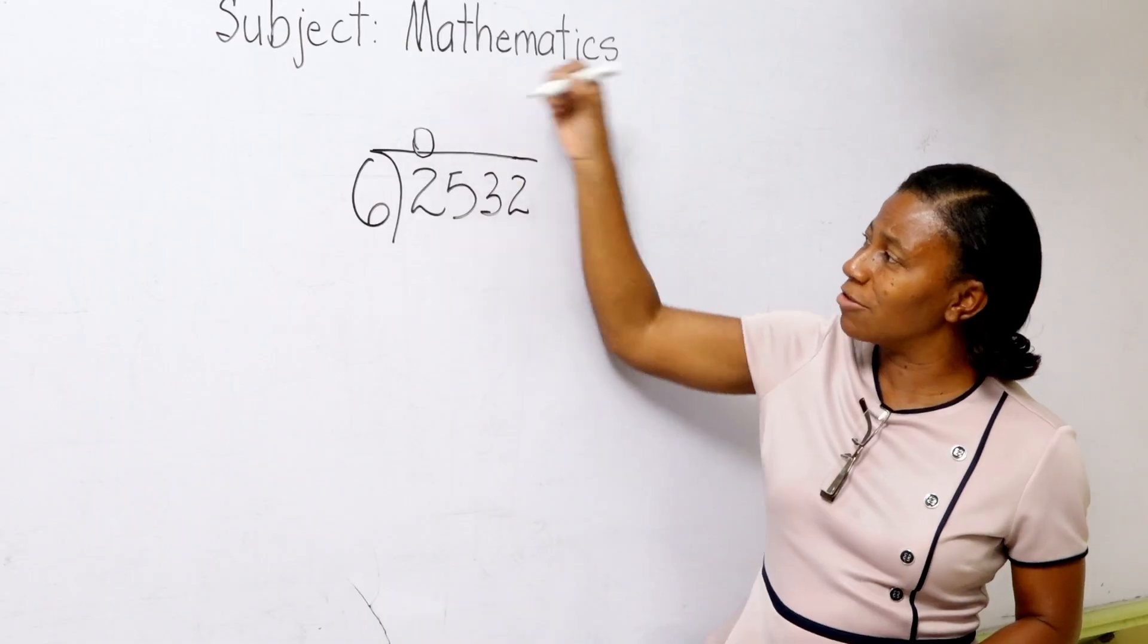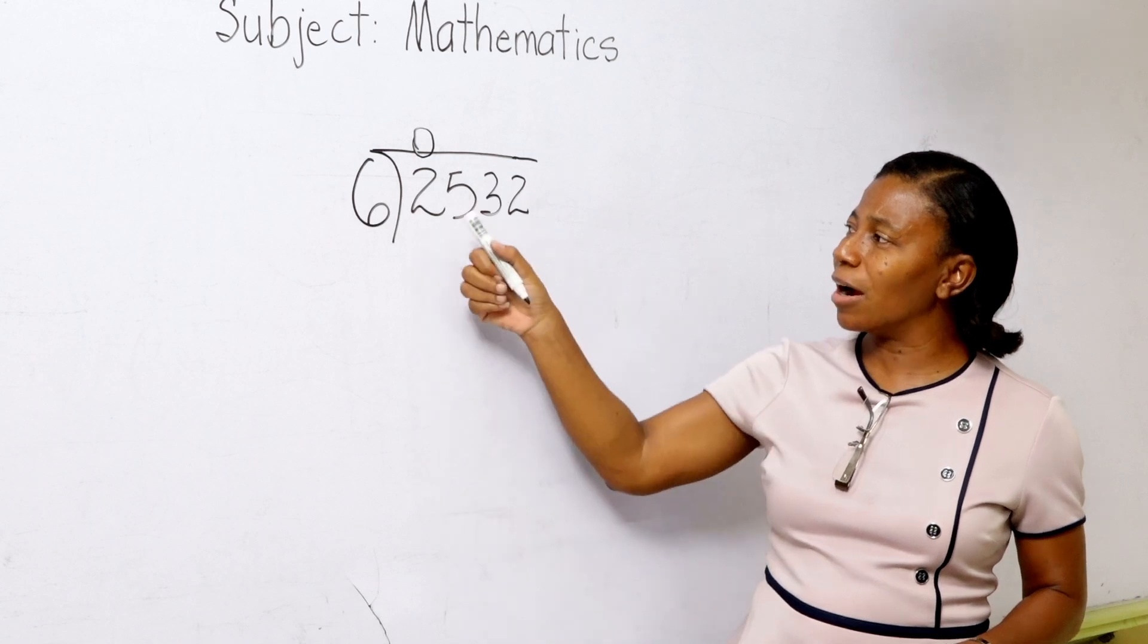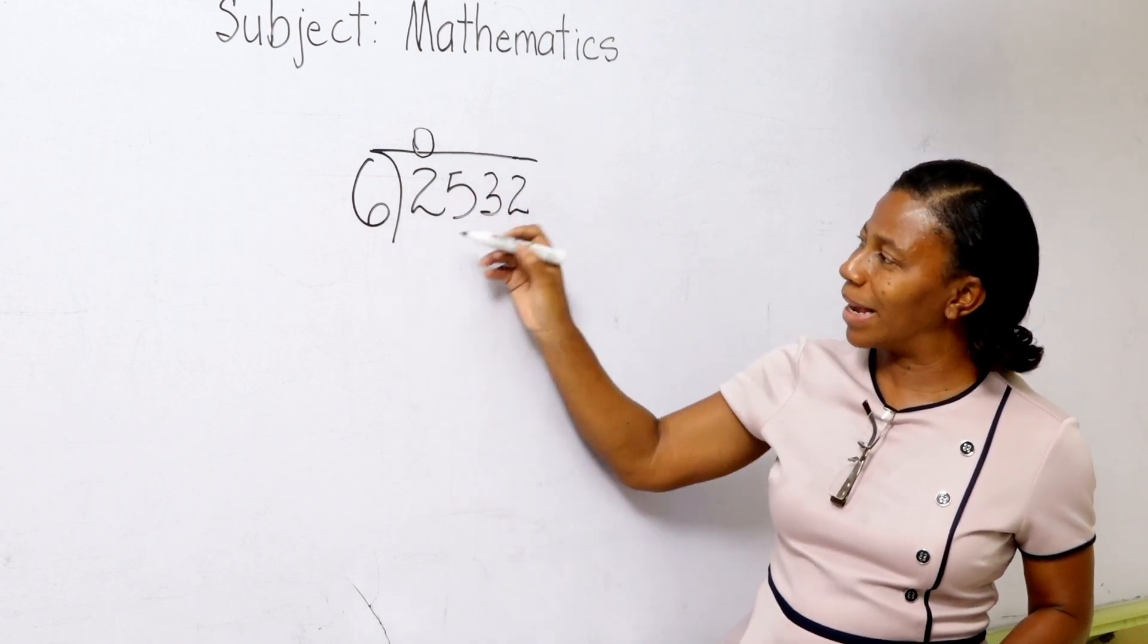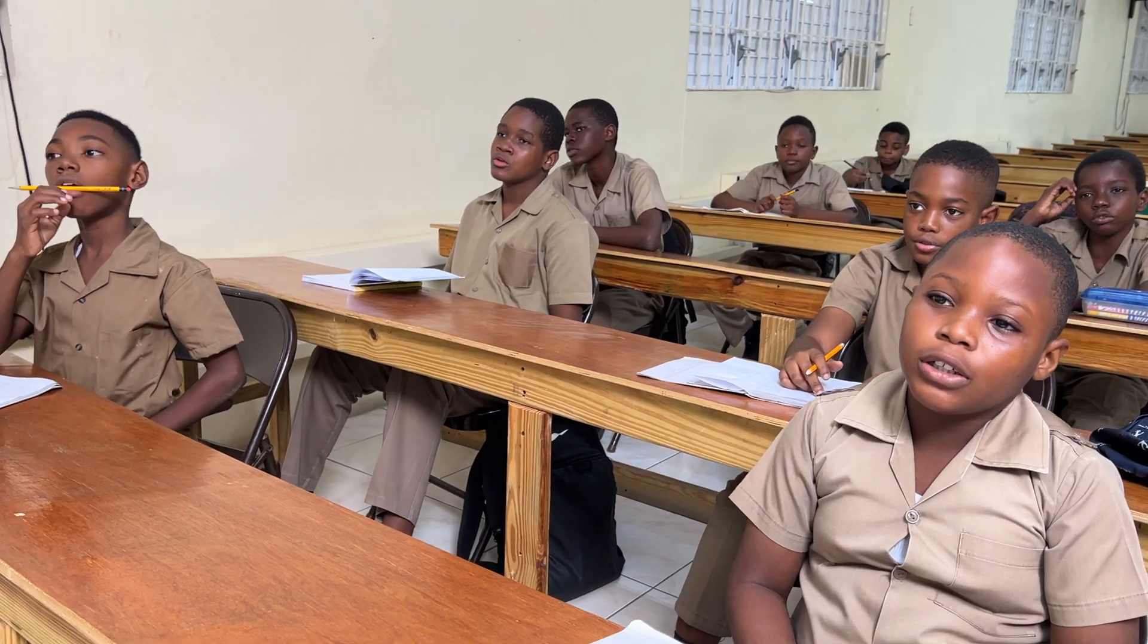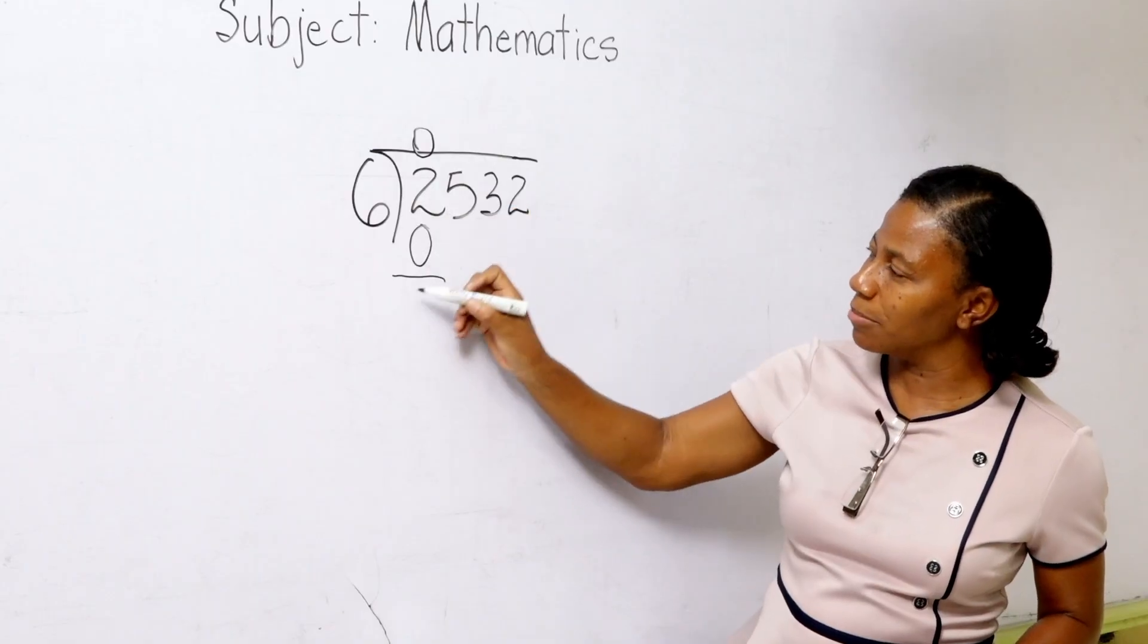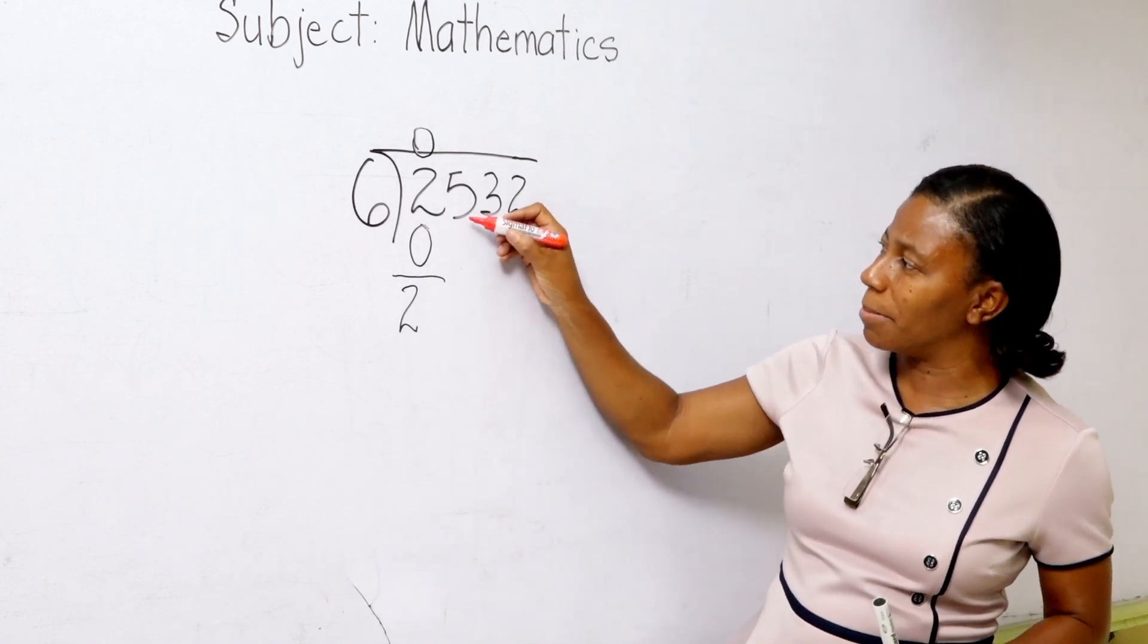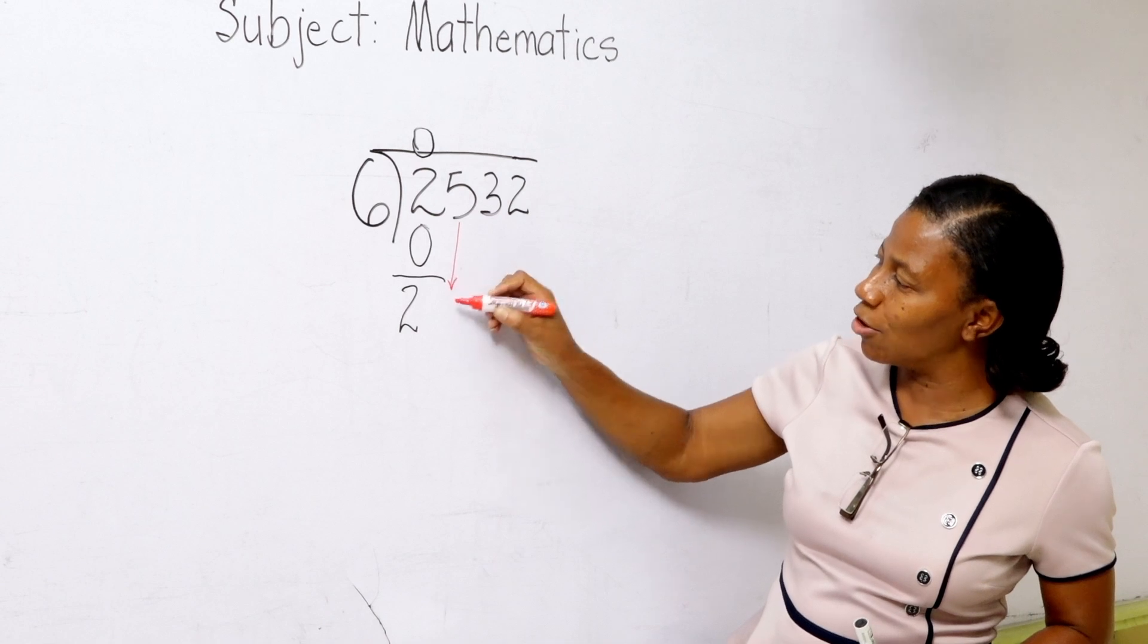So we are going to put a zero right there. And then we are going to move over and we are going to put 6 multiplied by 0 gives us 0. So we are going to bring 0 from 2 leaves 2. And then we are going to go next to the next number in line. Very good.